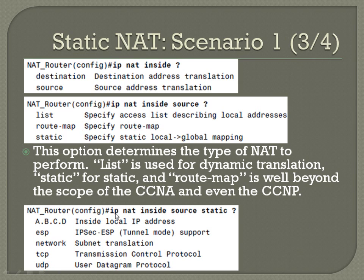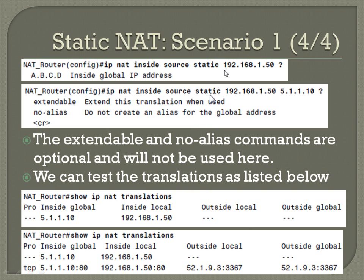We finish off the command IP NAT inside source static. With the question mark you see options: an IP address, an IPsec tunnel, a network, TCP, or UDP. In this case we're doing a whole IP, so we select the IP option. So: IP NAT inside source static 192.168.1.50, and then the inside global address 5.1.1.10. The extendable and no alias commands are optional and not used in this example, so we just enter it as is.